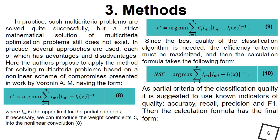This is especially true for the criterion of highest efficiency, which is calculated for each system separately and depends on business objectives. In practice, several approaches are used, each of which has advantages and disadvantages. We propose to apply the method for solving multi-criterion problems based on a non-linear scheme of compromises presented in work by Albert Voronin.